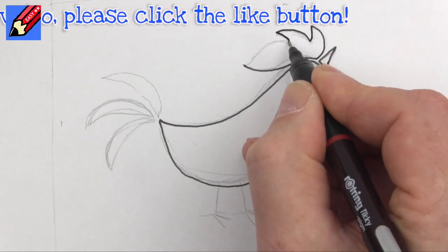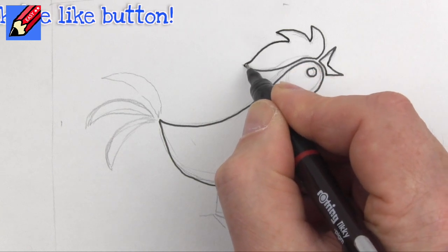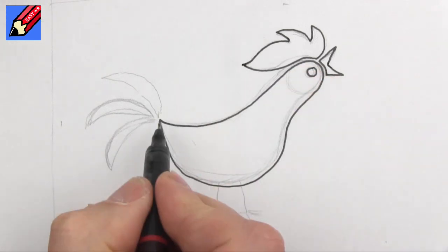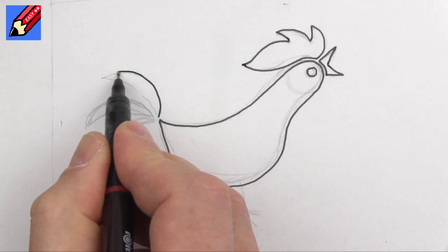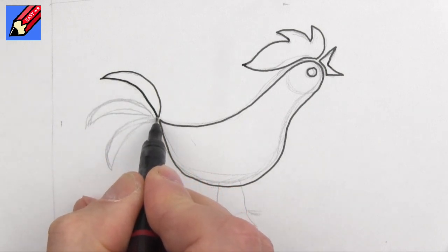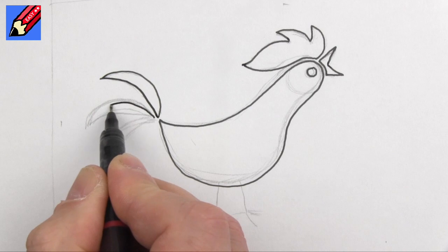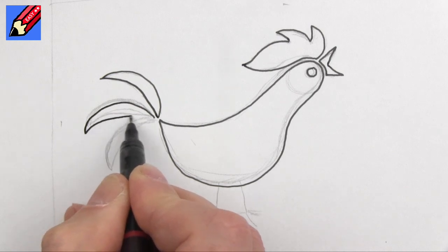Up to there and then that will come down to there. And then we want these nice curves coming out, coming out like that. Very simple.